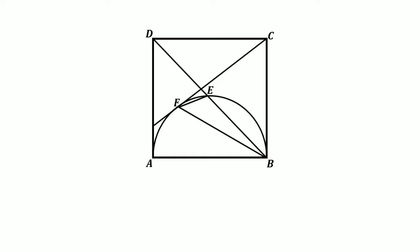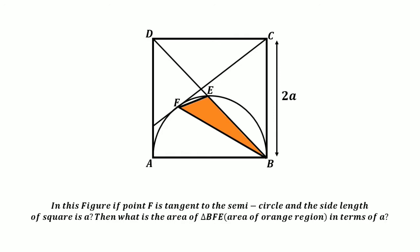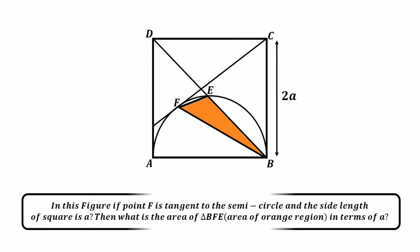Now if the side of the square is 2A, then what is the area of this orange region and what is the area of triangle DEF in terms of A? Please give your trial to this question and keep watching for the solution.